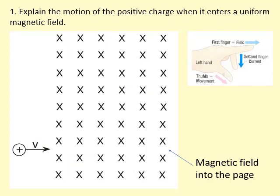Before, we had current flowing through a wire in a magnetic field which creates a force on the wire. Now we have a free charge moving into a magnetic field. Because current is defined as the rate of flow of positive charge, the current is in the same direction as the velocity of the particle — so current is towards the right. Applying Fleming's left hand rule: current towards the right, field into the page, we get force upwards.